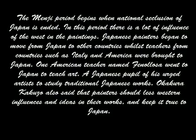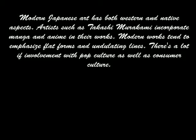The Meiji period began when national seclusion of Japan ended. In this period there was a lot of Western influence in the paintings. Japanese painters began to move to other countries while teachers from Italy and America were brought to Japan. One American teacher named Ernest Fenollosa went to Japan to teach art. A Japanese pupil of his urged artists to study traditional Japanese works. Okakura Kakuzo also said that painters should use less Western influences in their works and keep it true to Japan. Artists such as Taikan developed a style known as Nihonga, which offers pictorial space and does not use outlines; instead, defined forms and fields of color are practiced. Floating Lights by Yokoyama Taikan demonstrates this open space and lack of outlines, inspired by a trip to India.